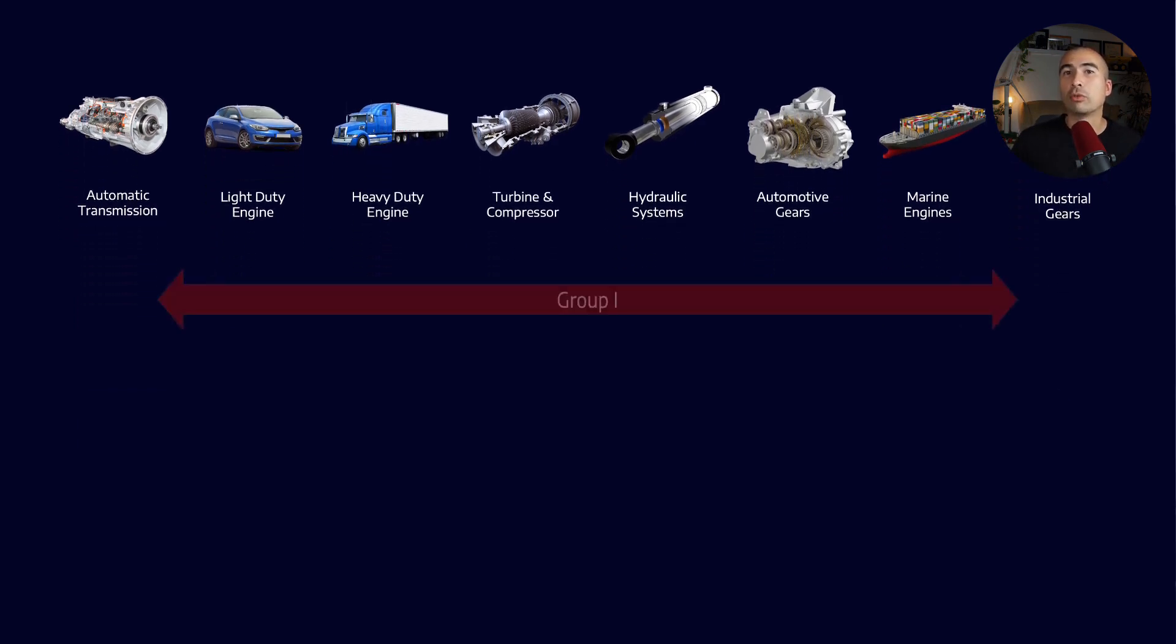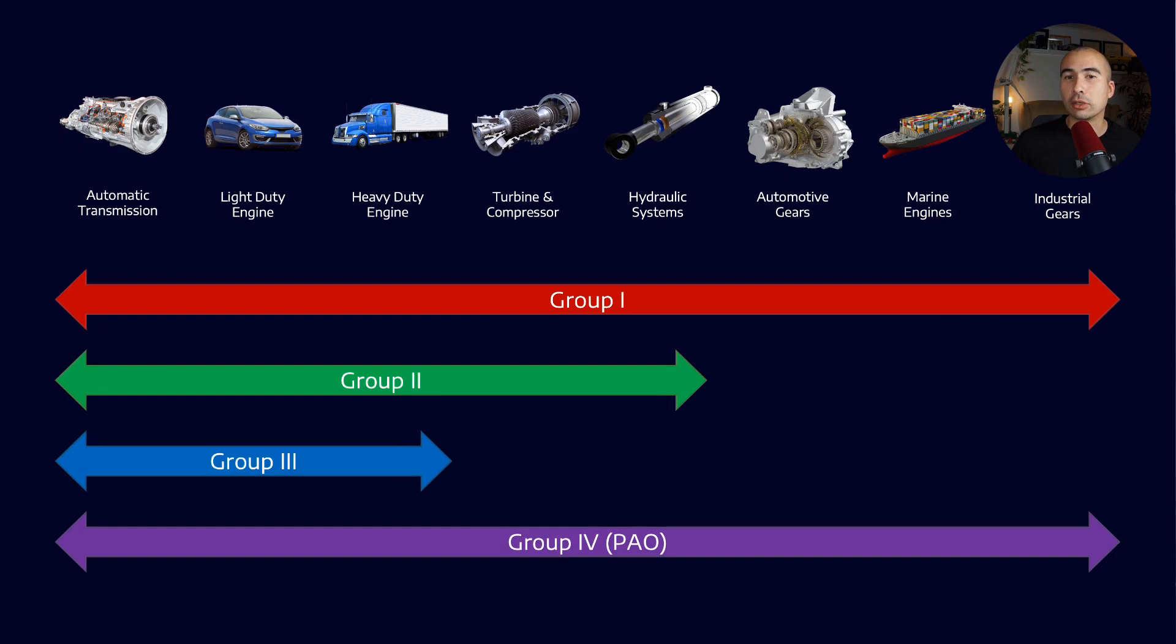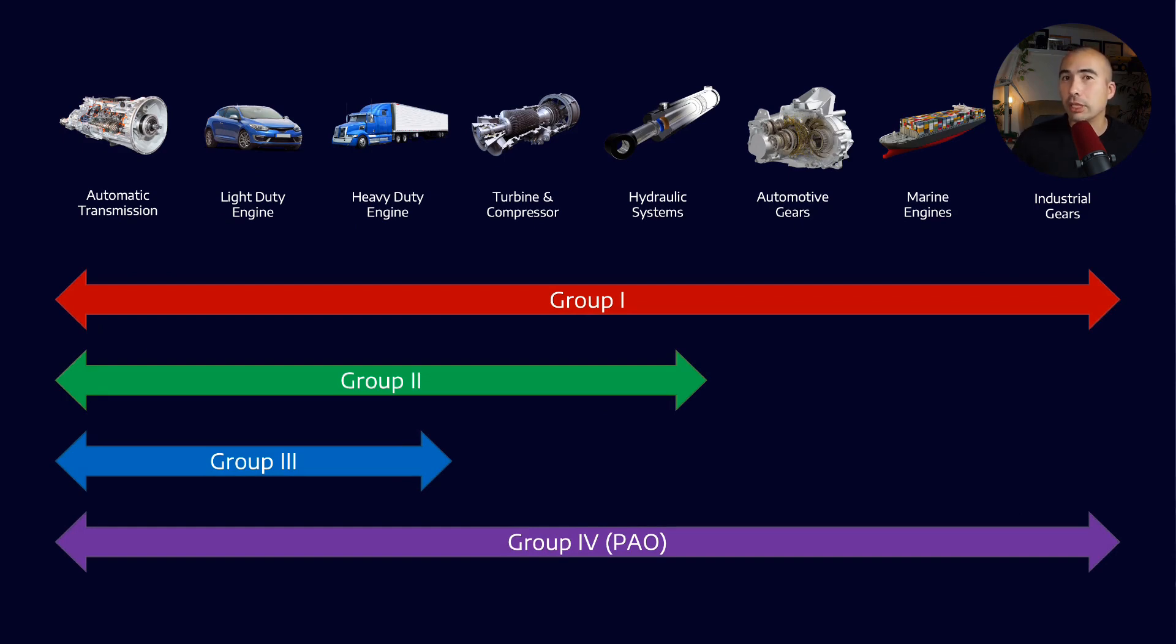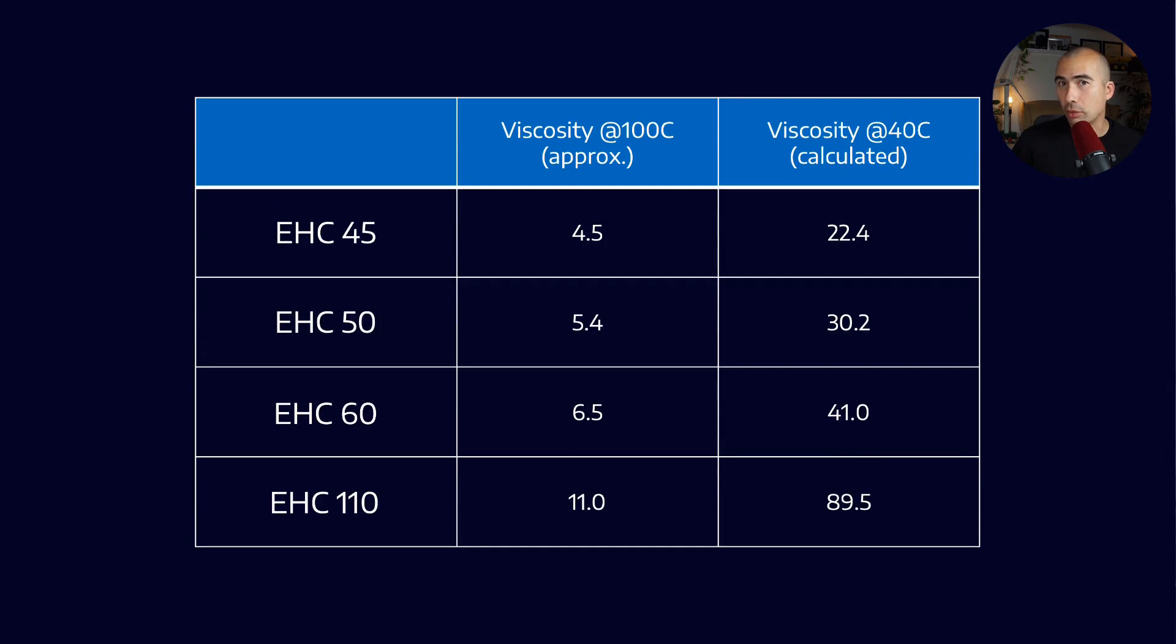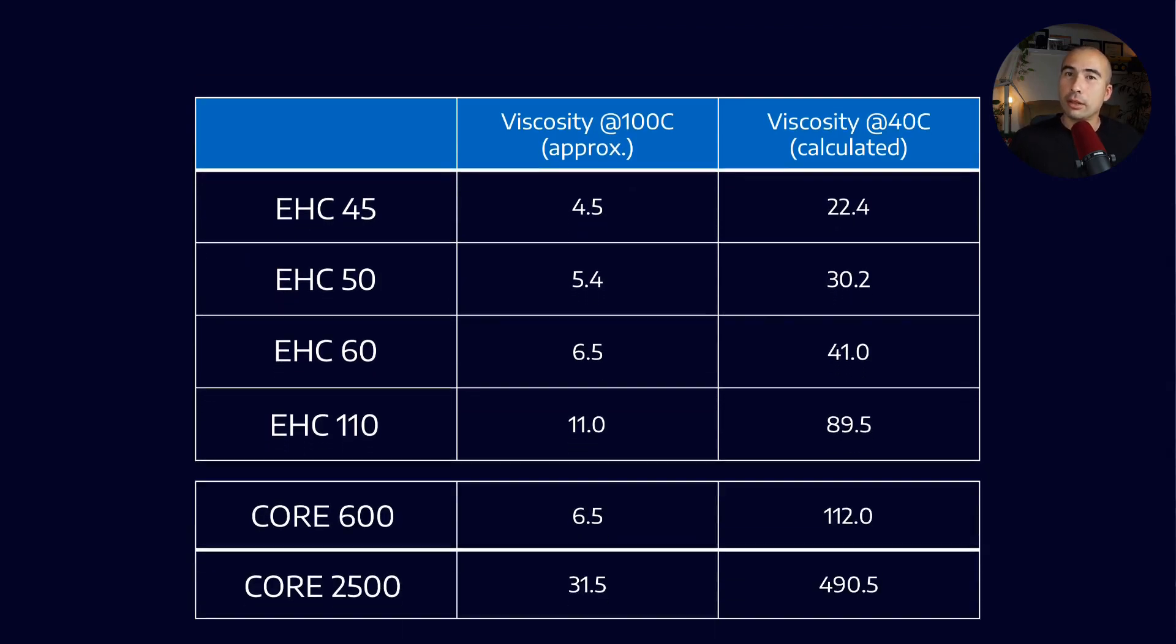Well, in the past, we have always relied on the Group 1 bright stocks. Group 1 is actually available in a much wider viscosity range. So if you go back to the ExxonMobil base stock, the base stock slate includes Group 1s, so the core products, and core 600 and core 2500 have much higher viscosity at 40 degrees Celsius. So you can make an ISO 220, 320, or even 460 style industrial lubricant quite easily from these Group 1 bright stocks.